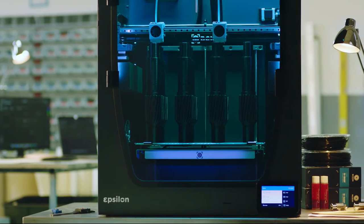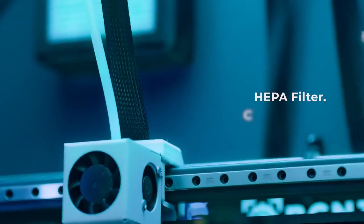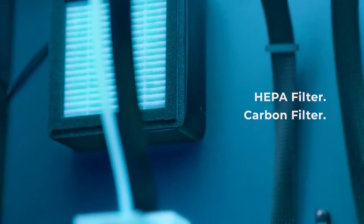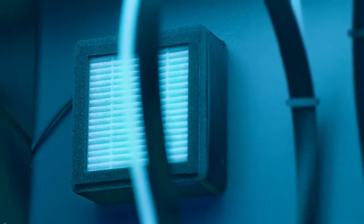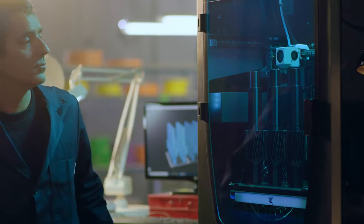The BCN 3D Epsilon comes with unparalleled safety features, including a HEPA filter and a carbon filter, which prevent the release of potentially harmful particles and fumes into the air, ensuring a safe environment for those around the printer.